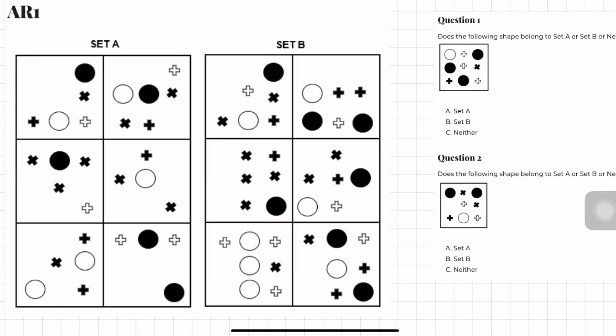Let's work through an example. We have set A and set B. Looking at the fourth box in set A there is one plus, one circle, and two X's. Looking at the sixth box there are two pluses and two circles, and in another box two pluses, two circles, and one X. From here I can immediately see that there are equal numbers of circles and pluses, and the X's are irrelevant.